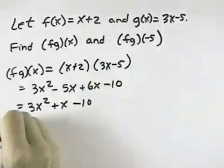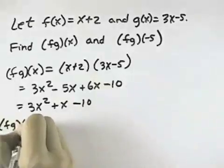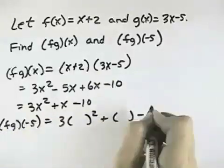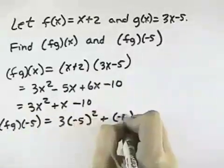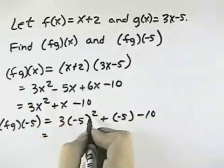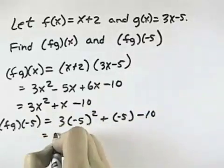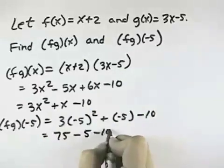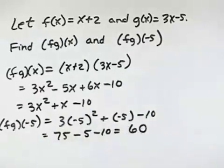And we can evaluate this at negative 5 by taking out our x's and replacing them with negative 5. When we do that, negative 5 squared is 25 times 3 is 75, minus 5 minus 10 will leave us with 60.